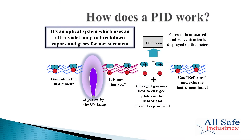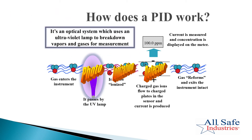So here's how a PID works. It's actually an optical system, meaning it's a light bulb. As gas enters the instrument, it's going to pass through ultraviolet light. The ultraviolet light will ionize the sample, meaning it's separating the positive and the negative particles. It will then attach to the detector plate in the instrument, and then the circuit board — the motherboard in there — will turn that into a number that we can understand and show that value on the screen. So that's where we get the name photo ionization detector — it just explains how the sensor works.